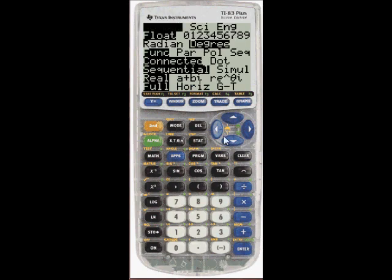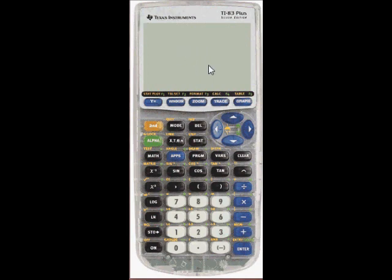And I'll clear this out. Say I want to go back to radians. Select radians. Go back to the blank home screen here. Let's do cosine of pi over 2. It should be 0. And there it is.